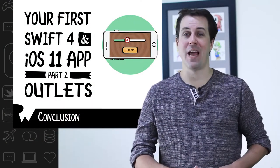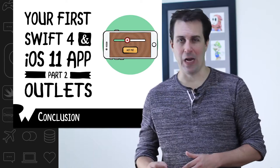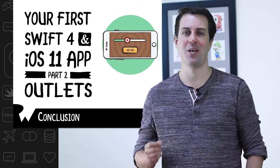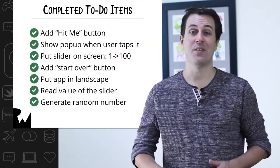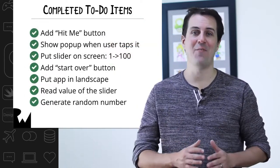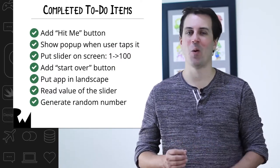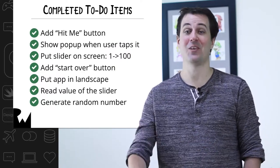At this point, you should understand how to connect user interface controls for your apps — like labels, buttons, or sliders — to your own Swift code. We have now completed seven out of 11 of the tasks in our programming to-do list for Bullseye. Congratulations!